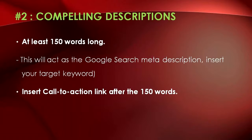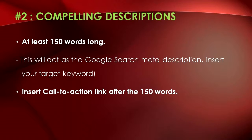Second strategy: write compelling descriptions for your channel. Make sure your channel description is at least 150 words long. What you write will act as the Google search meta description that appears on search engine results. This is also where you want to insert your target keyword to increase relevance and popularity. Another tip is to insert a call to action link after the 150 words — this is where you bring your audience deeper into what your business has to offer and what you can do to help solve their problem.